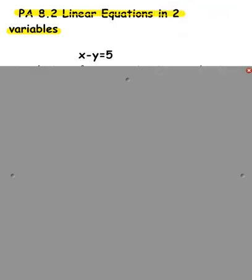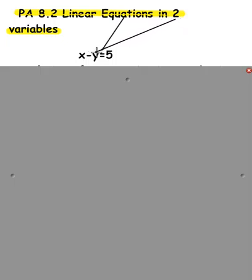When it says linear equations in two variables, linear equations have equal signs. And it says two variables — we've never had equations with two variables. We've always had one to solve for. Now we have two variables. So here you see a y and you see x.